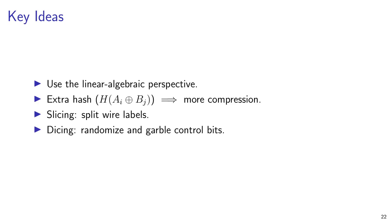To summarize, there are a few key ideas we use to beat half-gates. The linear algebraic perspective is powerful because it lets us put the whole garbled gate into one linear equation. More hashes allow for more redundancy in the hash matrix, and so for better compression of the gate ciphertexts. Half-gates are missing the third hash evaluation, H of A XOR B. To take advantage of this redundancy, we had to use slicing and split all the wire labels in half. And we needed dicing to fix a technical issue with the control matrices, which would otherwise have leaked the plaintext values to the evaluator.